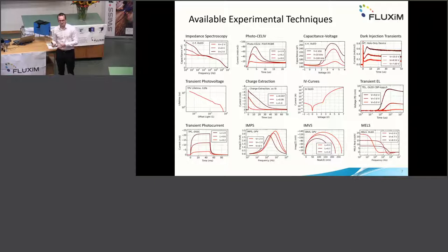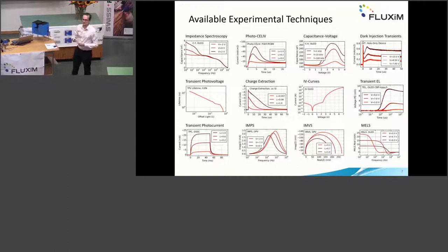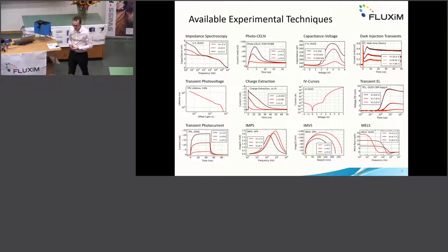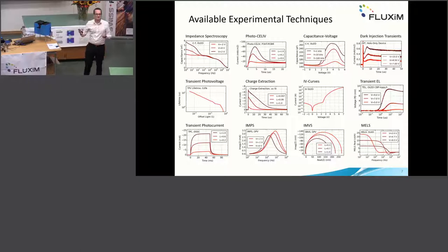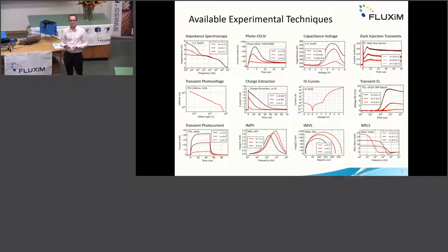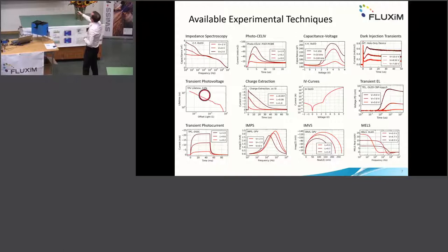IMPS and IMVS are two techniques used a lot in the dye-sensitized community, but also interesting for perovskite and organic solar cells. It's like impedance spectroscopy but done with light instead of voltage. You have a certain offset light intensity, you modulate it at a certain frequency, measure the current, and plot the ratio of current to light intensity over different frequencies. This is IMPS — intensity modulated photocurrent spectroscopy. Done at VOC with current held at zero, measuring voltage instead, it becomes IMVS.